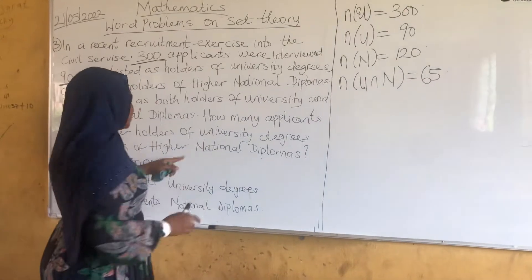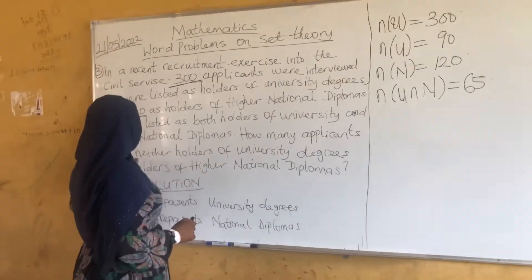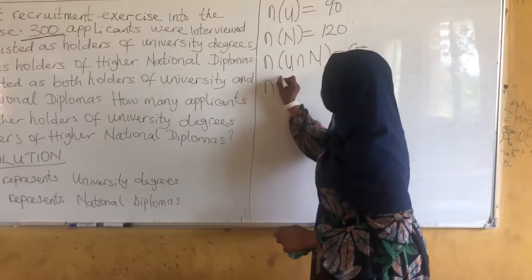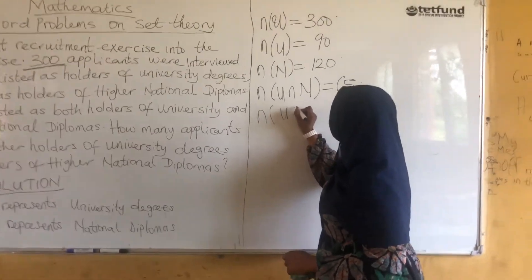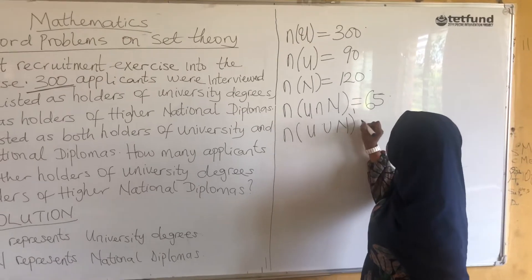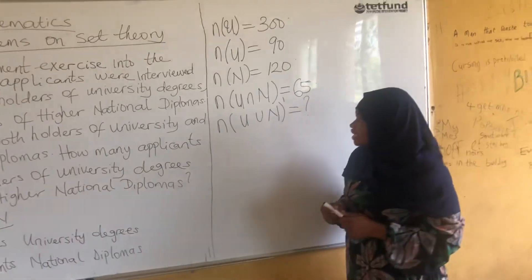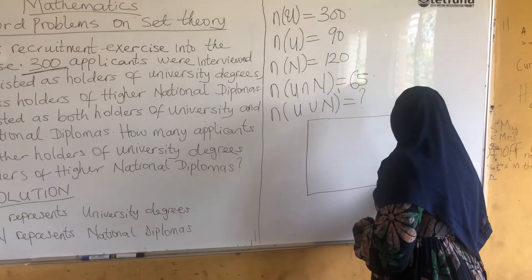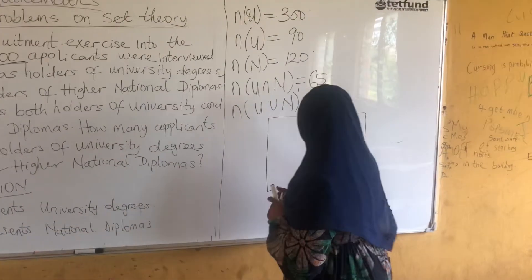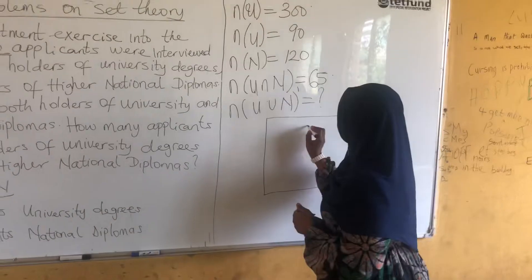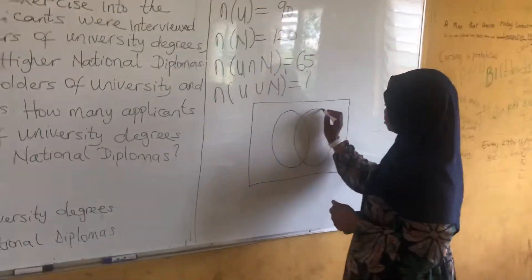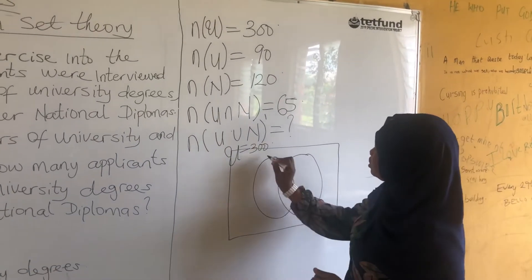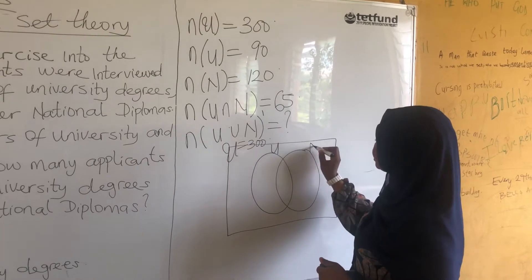We have to find those applicants that do not have any of the degree certificates. That will be U union N, complement — that is what we want to find. The next thing is to represent everything in a Venn diagram. Let's use two markers. Here will be the universal set, equal to 300.